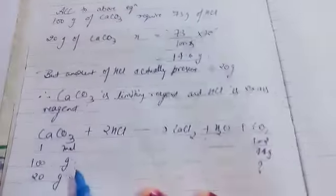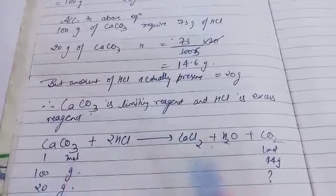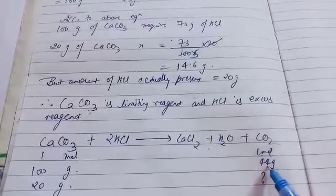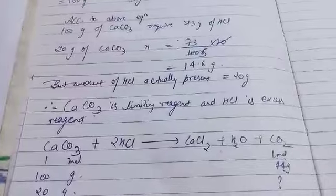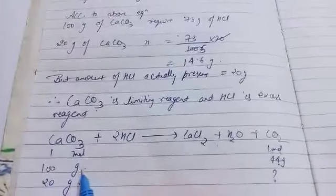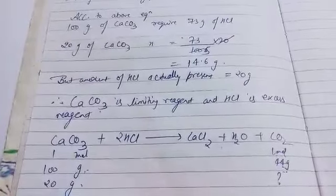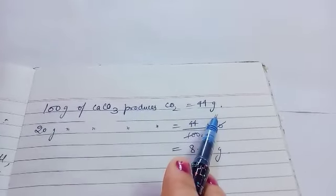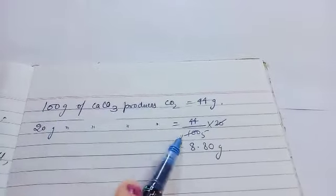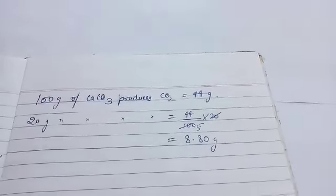Since CaCO₃ is the limiting reagent, we calculate CO₂ based on it. From the equation, 100 g of CaCO₃ produces 44 g of CO₂ (molar mass of CO₂ = 44 g/mol). For 20 g of CaCO₃, using the unitary method: CO₂ = (44/100) × 20 = 8.80 g. So the answer is 8.80 grams of CO₂ produced.